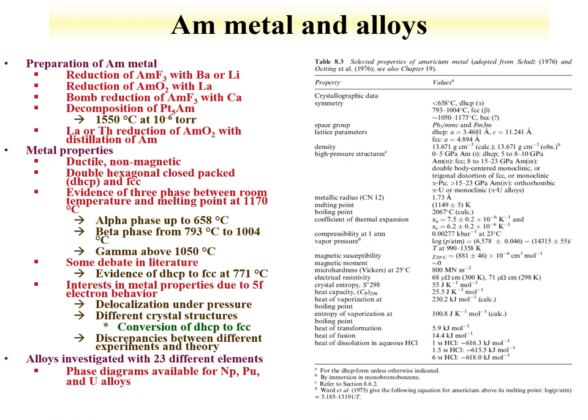A number of americium alloys have been prepared. The ones that are important for the fuel cycle include alloys with neptunium, plutonium, and uranium, and the phase diagrams for those alloys are available.